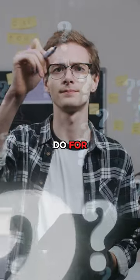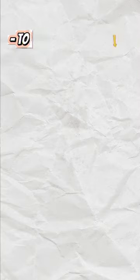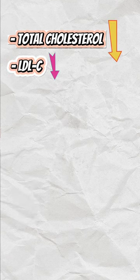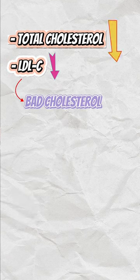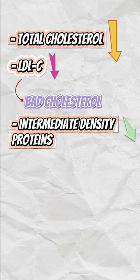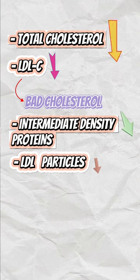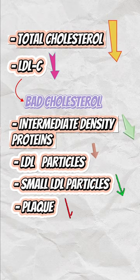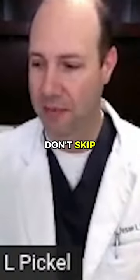What did this do for people's cholesterol? It lowered their total cholesterol, it lowered the LDL-C (often called the bad cholesterol), and it also lowered intermediate density proteins. It lowered the LDL particles, it lowered the small LDL particles, it decreased the plaque, and decreased inflammation. Walnuts are great, so don't skimp on your walnuts.